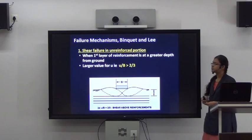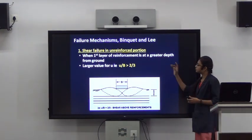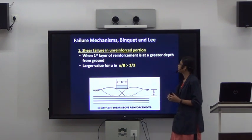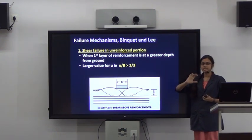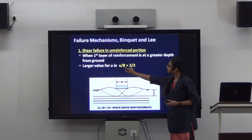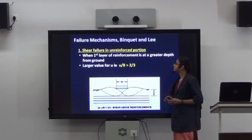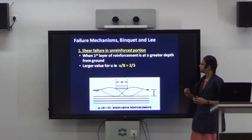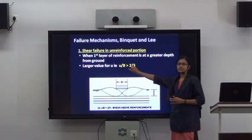Binquet and Lee proposed three failure mechanisms. The first is shear failure of the unreinforced portion, which occurs when the first reinforcement layer is at a greater depth — specifically when the ratio u/B is greater than 2/3, meaning there is a large gap between the first reinforcement and the ground surface.